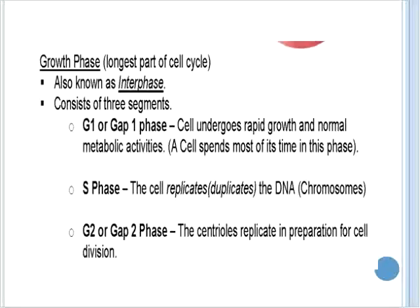The growth phase, which consists of G1, S, and G2, is actually the longest part of the cell cycle, and it's also known as interphase. During the first segment, G1, here the cell undergoes rapid growth and normal metabolic activities, and the cell will actually spend most of its time in this phase.